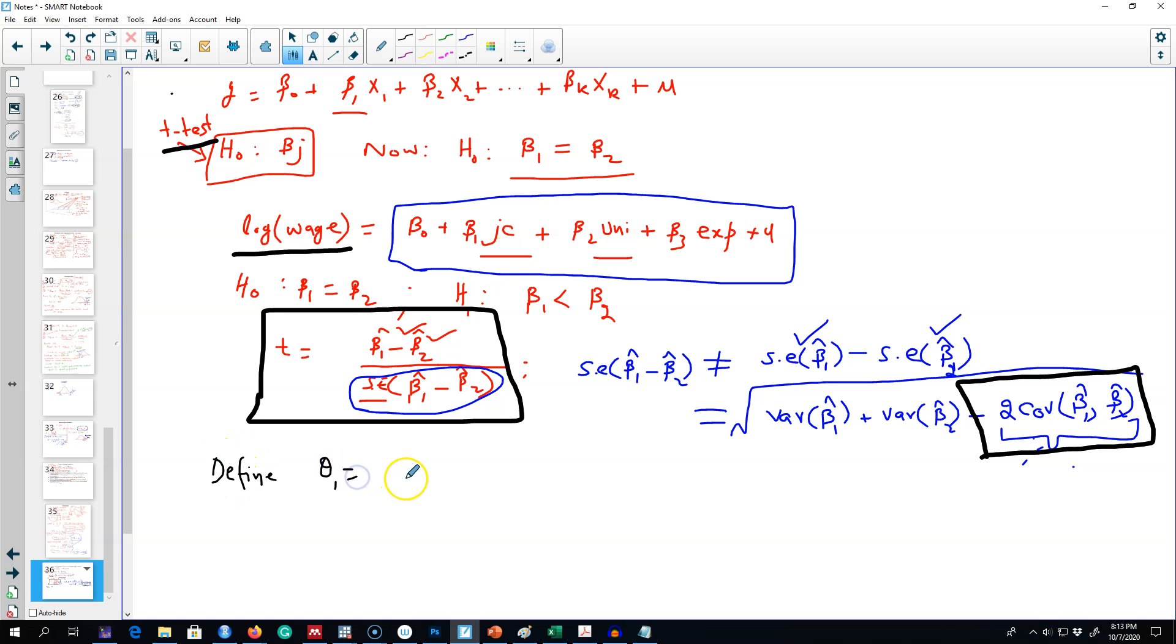We can test the hypothesis that theta 1 is 0 against h1 that theta 1 is negative. So see here, if theta 1 is 0, then both beta 1 and beta 2 are identical. On the other hand, if theta 1 is a negative number, it means beta 2 is greater than beta 1, that is, returns to university education are higher than the returns to education on junior college.